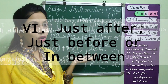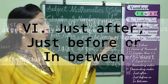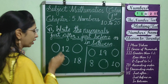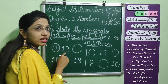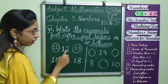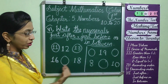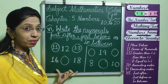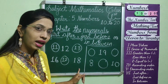Now we will move on to the last topic of today's class, the 6th — write the numerals: just after, just before, or in between. In the series, just before 12 is 11, and just after 12 is 13. So the series is 11, 12, 13. Next example: 16 and 18 — what is the in-between number in the series? 16, 17, and 18. So, 17 is the in-between number.